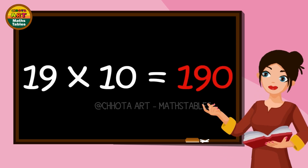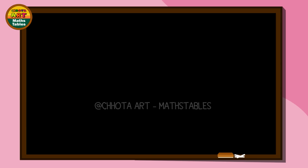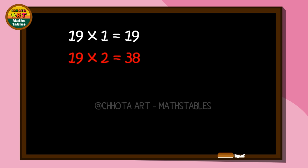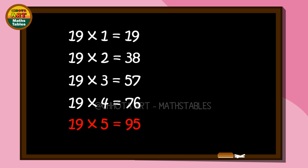19 tens are 190. 19 ones are 19. 19 twos are 38. 19 threes are 57. 19 fours are 76. 19 fives are 95.